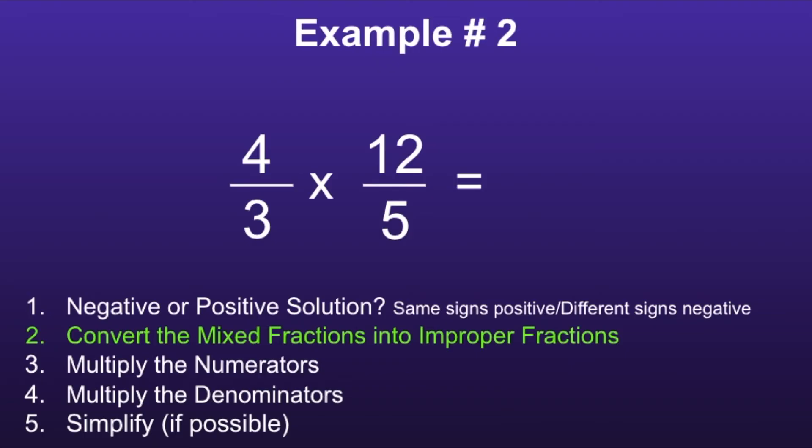This moves us on to step number three: multiply the numerators. Four times twelve is equal to forty-eight. Now we want to multiply the denominators. Three times five is equal to fifteen. And finally, step five: simplify if possible.